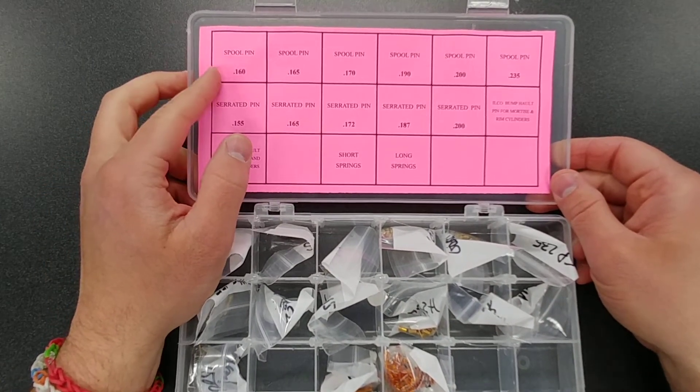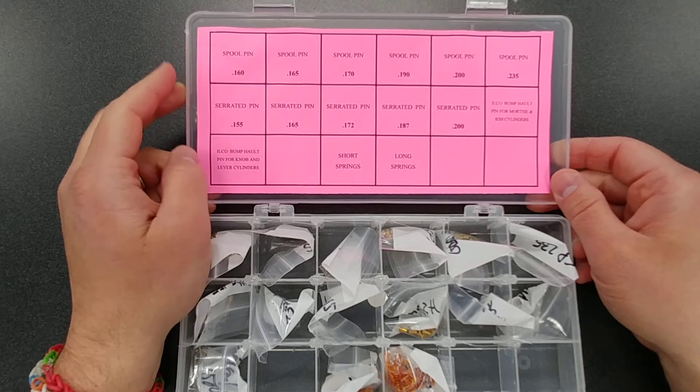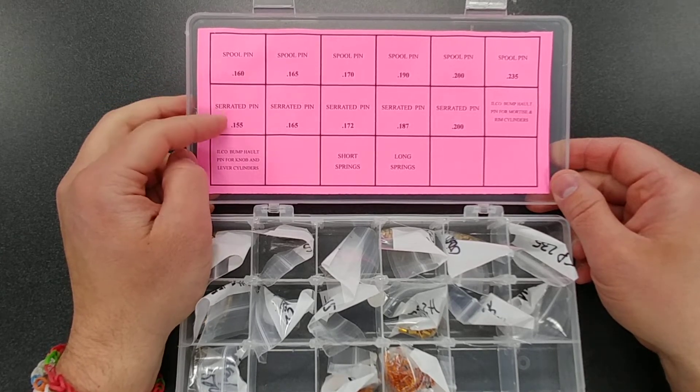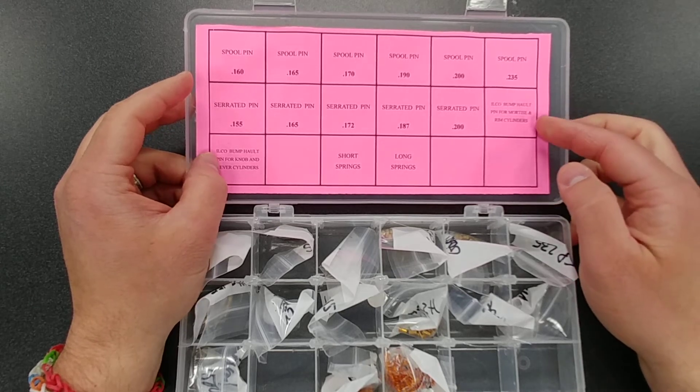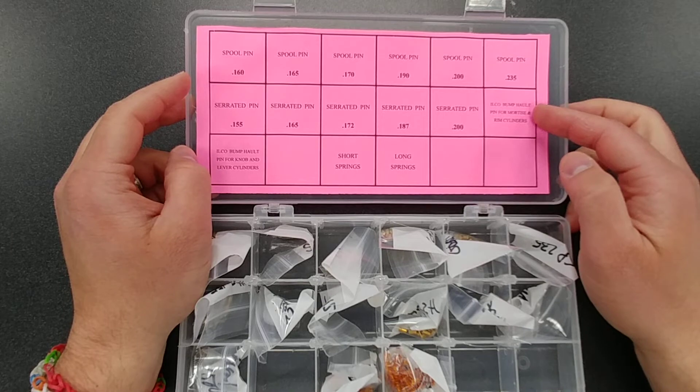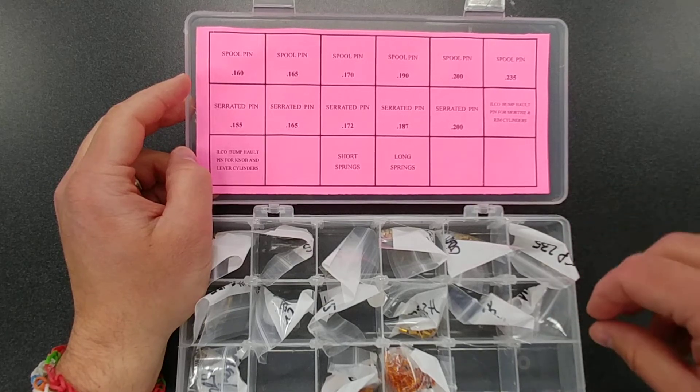It's going to come with six different sizes, five different sizes of the serrated pins, and it's going to come with the two different types of Ilko bump halt pins. For like, this one's for mortise and rim cylinders. Let me show you what that looks like.